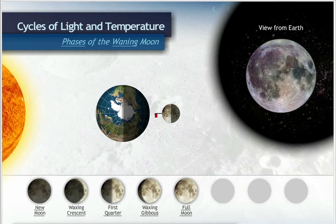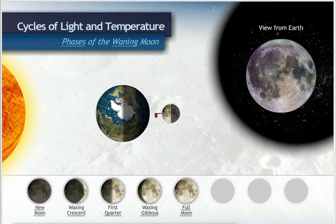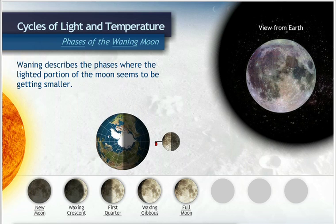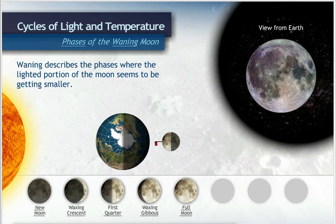From the time the moon is full until it reaches new moon, it is called waning. Waning describes the phases where the lighted portion of the moon seems to be getting smaller.